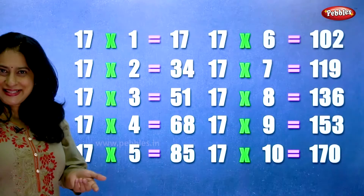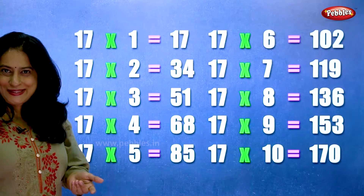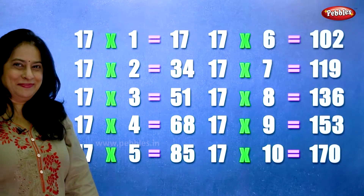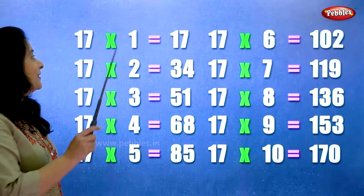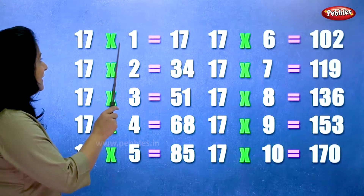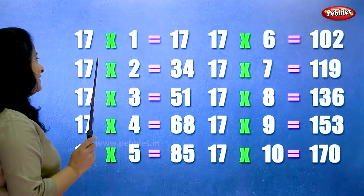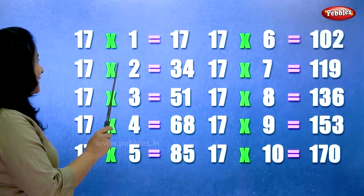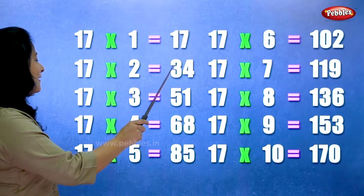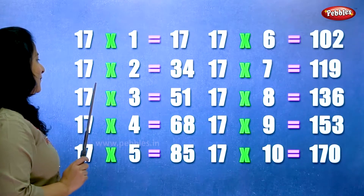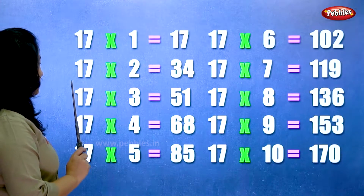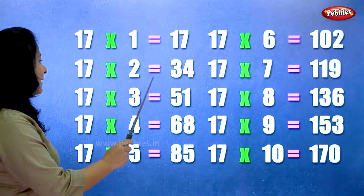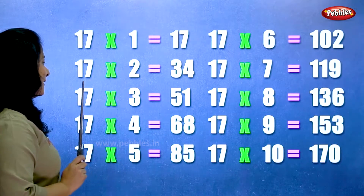Let's learn the table of 17 one more time. 17 ones are 17. 17 twos are 34. 17 threes are 51.